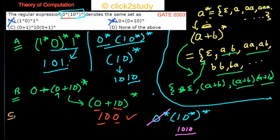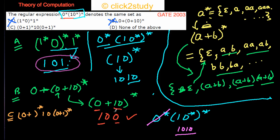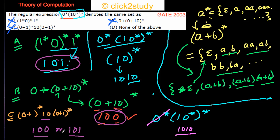Option C is (0+1)-star 10 (0+1)-star. This looks complicated but it can generate both 101 and 10 — strings that A and B were generating but the given expression cannot. Since the given expression cannot generate what C generates, option C is also eliminated. That leaves only option D — none of the above — as the correct answer.